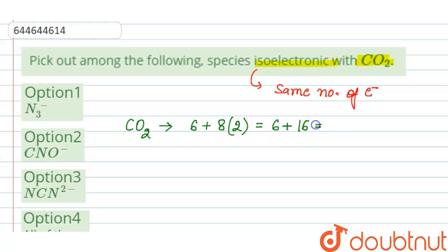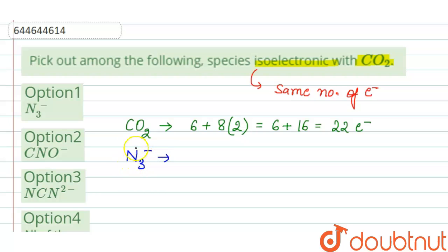So it will be 6 plus 16, which equals 22 electrons. Now we calculate for N₃⁻. The atomic number of nitrogen is 7, so the number of electrons in nitrogen is 7, and there are three nitrogen atoms, so multiplied by 3, and there is a negative charge, so plus 1 electron.